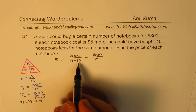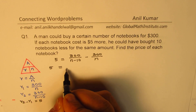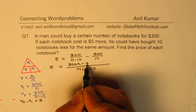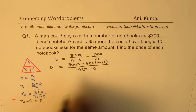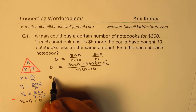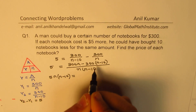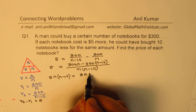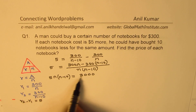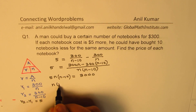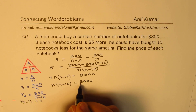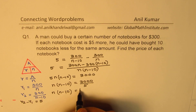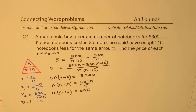Taking the common denominator N(N−10), we get 300N minus 300(N−10) equals 5·N(N−10). Cross-multiplying gives 5·N(N−10) on one side. When you open the bracket, 300N and −300N cancel and you get 3000. Dividing by 5, we get N(N−10) = 600, or N²−10N−600 = 0.